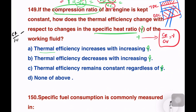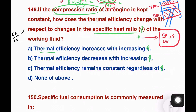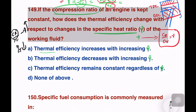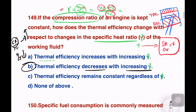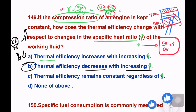Thermal efficiency increases with increases of the specific heat ratio gamma. So option number B is the right answer. This is the key technical point.